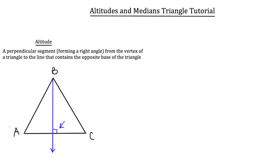Now let's do the same for vertices A and C. We'll see the altitude from A to its opposite side BC, and the altitude from vertex C to the opposite side AB. Notice that the three altitudes we've drawn all seem to intersect at a point right here in the center of the triangle.